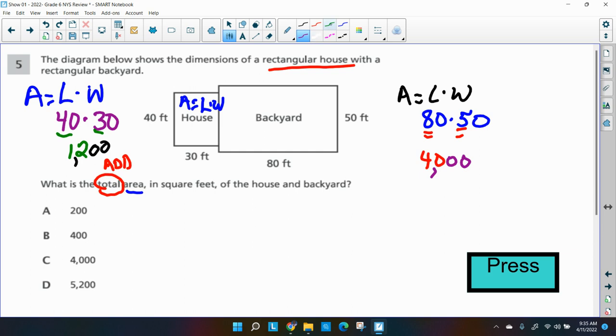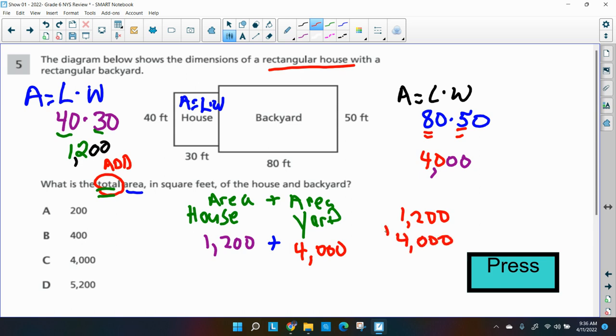Now remember, they said they want the total area. Total means we've got to add up the house area plus the area of the backyard. So let me get my numbers. Area of the house we said was 1,200 square feet plus the area of the yard, backyard, which was 4,000 square feet. So let's add it up. I'll line it up. 1,200, 4,000. And all I got to do is just a simple addition. 0 plus 0 is 0. 0 plus 0 is 0. 2 plus 0 is 2. Put a little comma there. 1 plus 4 is 5.